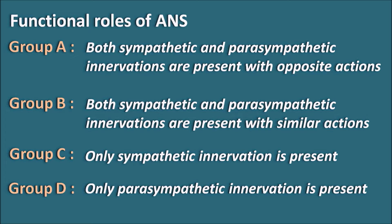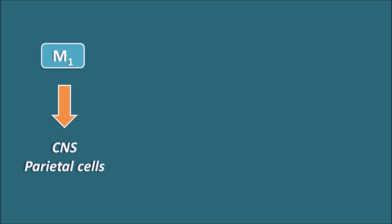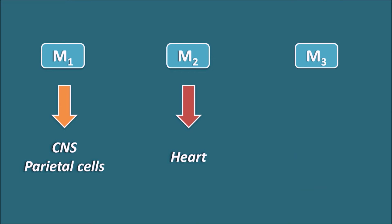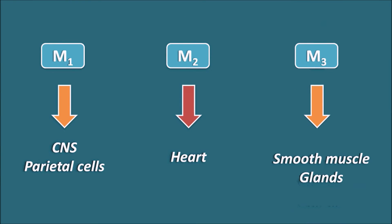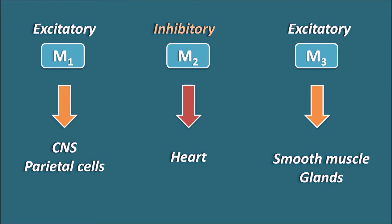Before discussing Group A, let us review the receptors involved with the sympathetic and parasympathetic systems. The parasympathetic system works mainly through muscarinic receptors: M1 receptors are present in the CNS and gastric parietal cells; M2 receptors are mainly on the heart; and M3 receptors are mainly on smooth muscle and glands. M1 and M3 receptors are excitatory, M2 receptors are inhibitory. M4 and M5 receptors also exist but their functional roles are not completely clear.